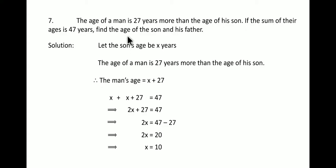This means the son's age is x years. So the son's age or the age of the son is 10 years. And the age of the man will be, since it is x plus 27, putting the value of x as 10, we get 10 plus 27, that is equal to 37 years. So son's age is 10 years and the man's age is 37 years.